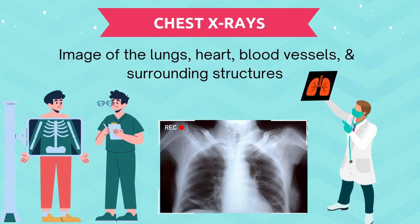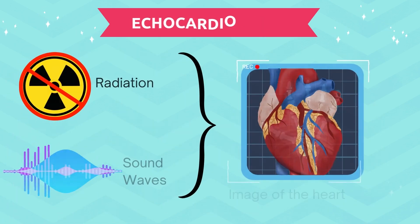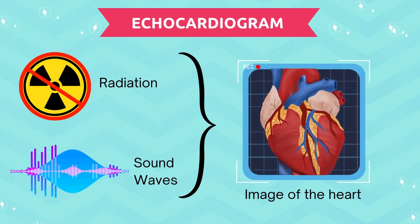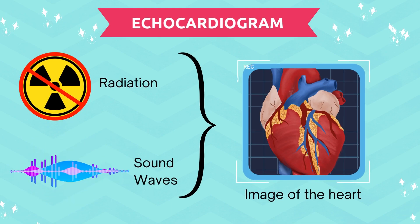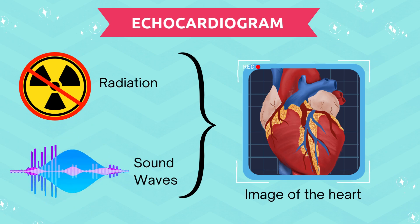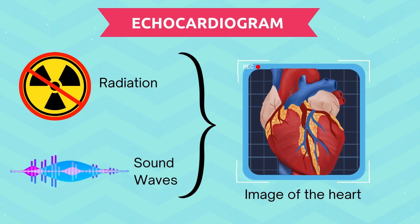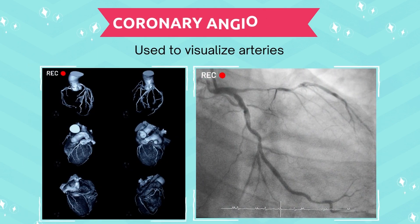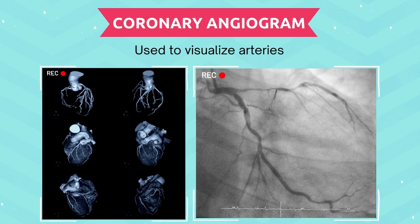A chest x-ray takes an image of the heart, lungs, blood vessels, surrounding bones, and surrounding air and fluid in the lungs. An echocardiogram is an ultrasound that also produces an image of the heart, except it uses sound waves instead of radiation. This is an important test that can detect any structural abnormalities, pressure differences within chambers, and any blood movement throughout the heart. And lastly, a coronary angiogram utilizes an x-ray image of the heart and dye to visualize the arteries that display the patient's blood flow and possible arterial narrowing.